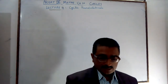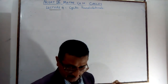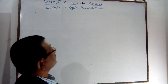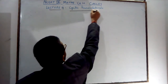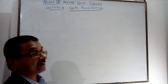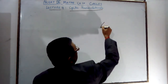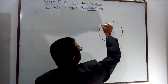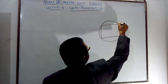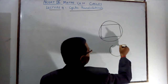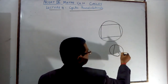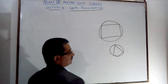Hello friends, here you are studying the circle chapter. Next topic is Cyclic Quadrilateral. What is a Cyclic Quadrilateral? A quadrilateral whose all the vertices lie on the circle is called a Cyclic Quadrilateral.